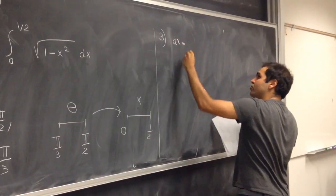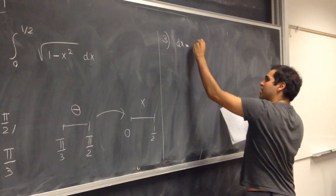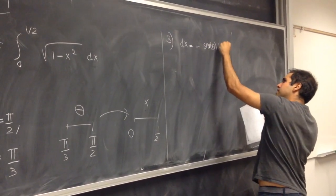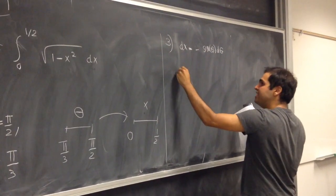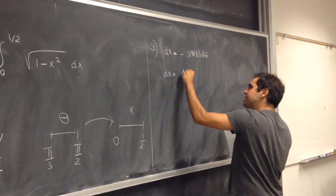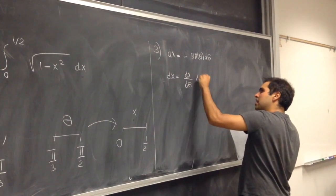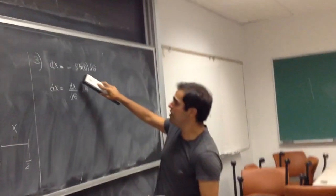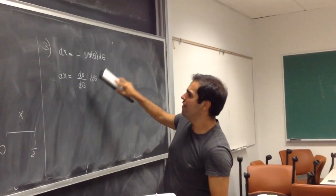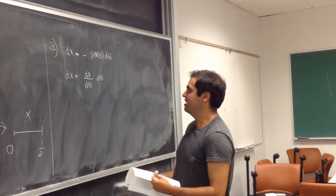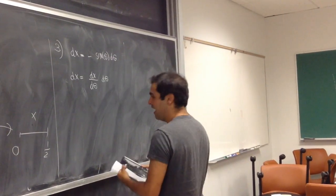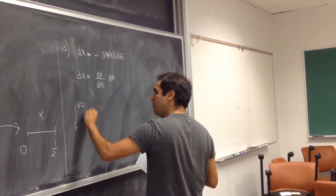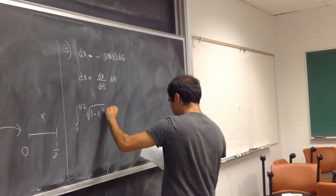dx will be — dx over d theta times d theta — so it's minus sine of theta d theta. Here it's interesting: you take the derivative of the old variable with respect to the new variable, and that's how you get it. Then we get that the integral from 0 to 1/2 of the square root of 1 minus x squared dx equals the transformed integral.